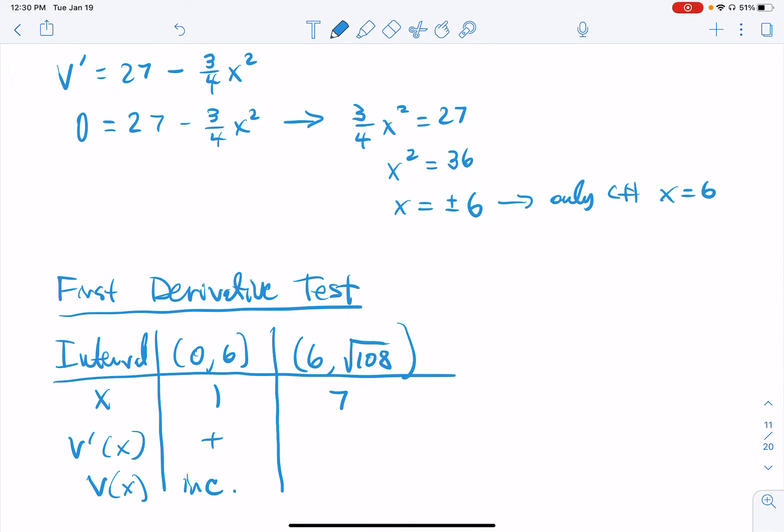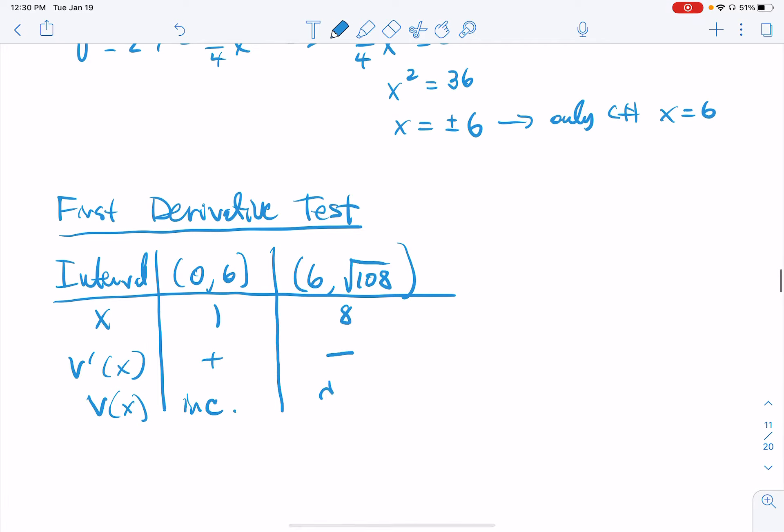You know what? I'm going to choose 8 instead. I'm going to choose 8 because 8 squared is 64. 64 divided by 4 is 16 times 3 is 48. Now 48 is bigger than the 27. It's going to be negative. Negative, so it's decreasing.